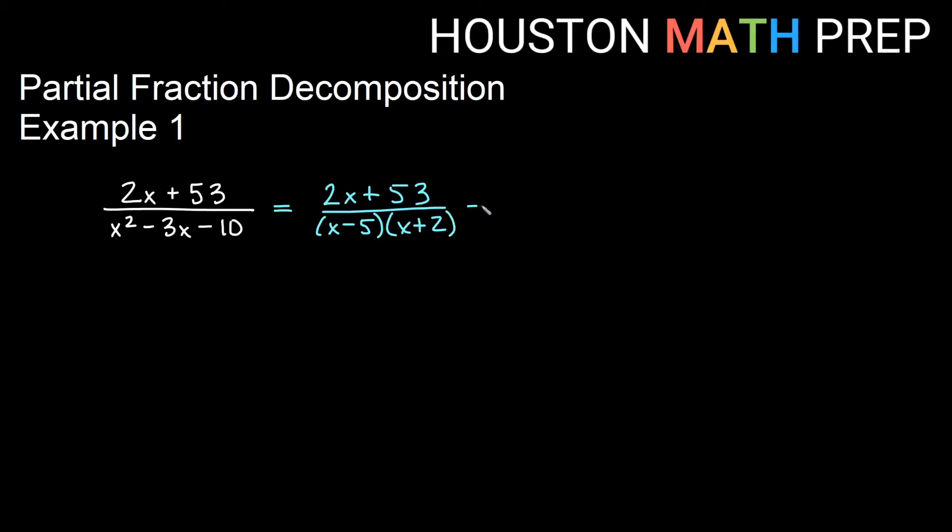So that tells us right away what denominators we're going to have. We're going to have x minus 5 as one of our denominators. We're going to have x plus 2, our other factor, as one of our denominators. Since these are linear factors, we will just need constants on the top. We'll need an A there, and since we've already used A, we'll need a B there.